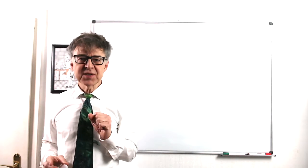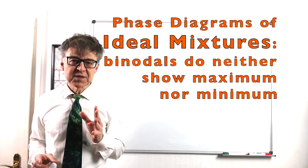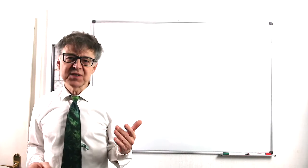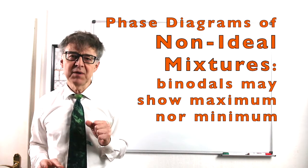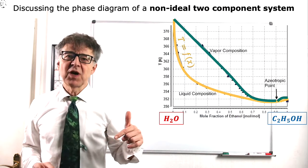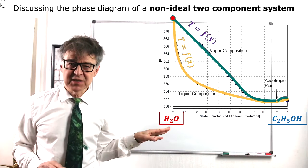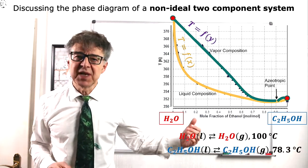The example just discussed, isobutyl alcohol and isopropyl alcohol, corresponds to an ideal mixture. With non-ideal mixtures, there may be maxima or minima in the phase diagram. For example, with the ethanol-water system, the boiling point curve and the dew point curve intersect three times, not only on both sides of the phase diagram at the pure components, but also in a minimum.